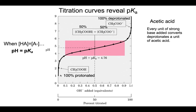We're going to add 0.1 units of strong base and then check the pH, add 0.2 units and then check the pH, and then graph that as the units of strong base added as a function of the pH. When you do that, you get a graph that looks like this.